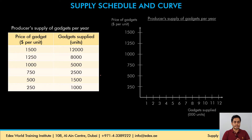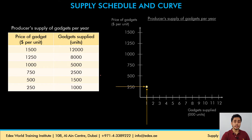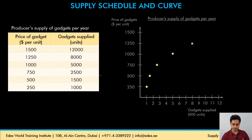On the y-axis we have the different prices, and on the x-axis we have the different quantities plotted. Starting with a price of $250 per unit, the suppliers are willing to supply only 1000 gadgets per year. When we plot this point on the graph, we get a dot here on the screen. When you plot all the prices and related quantities on the graph, we get a series of points. Then we join all the points to get our supply curve, which is labeled as S.